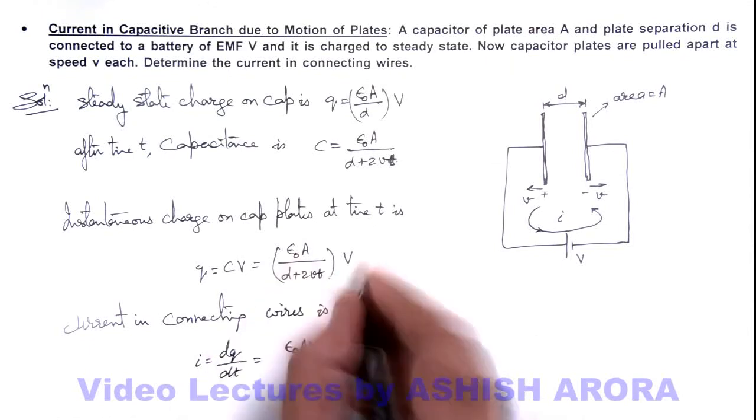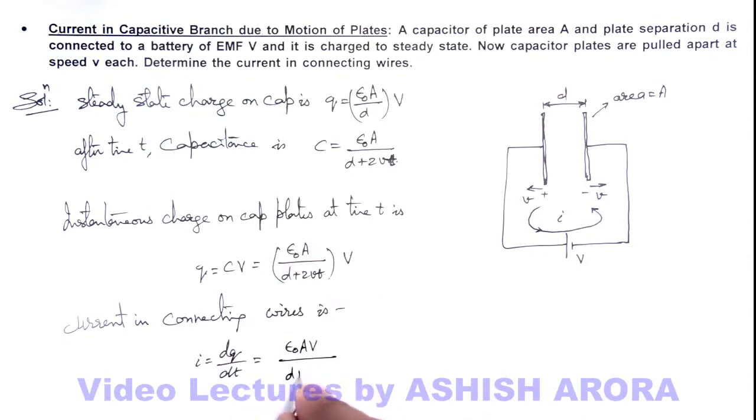On differentiating this, you can see we are getting ε₀Av, which is a constant, divided by (d + 2vt)² multiplied by 2v, with a negative sign.